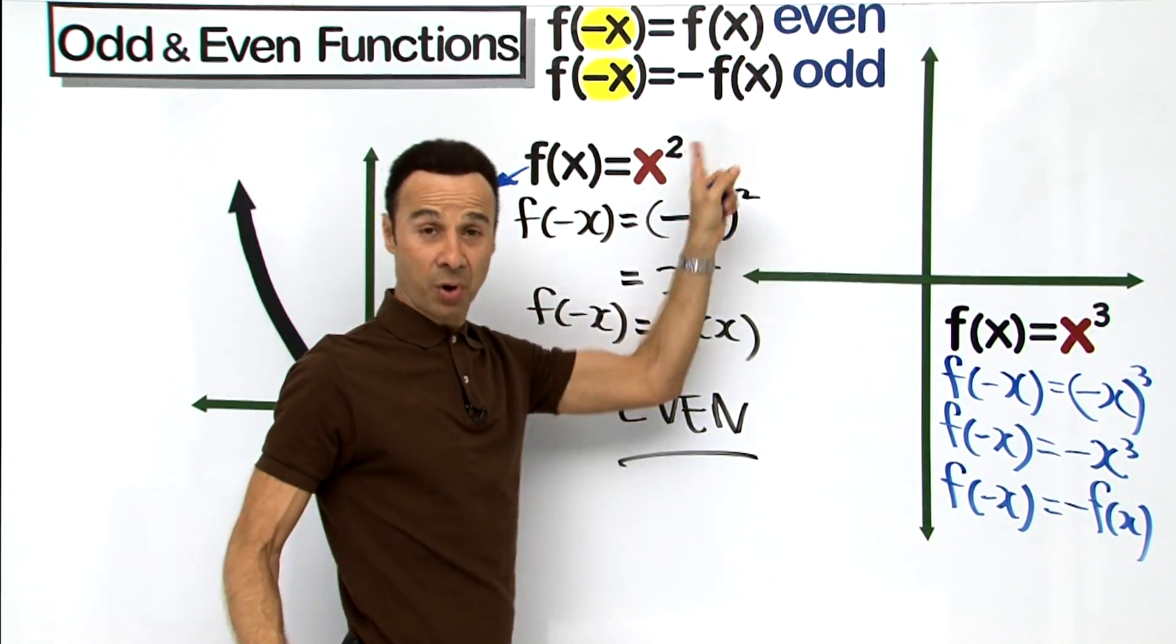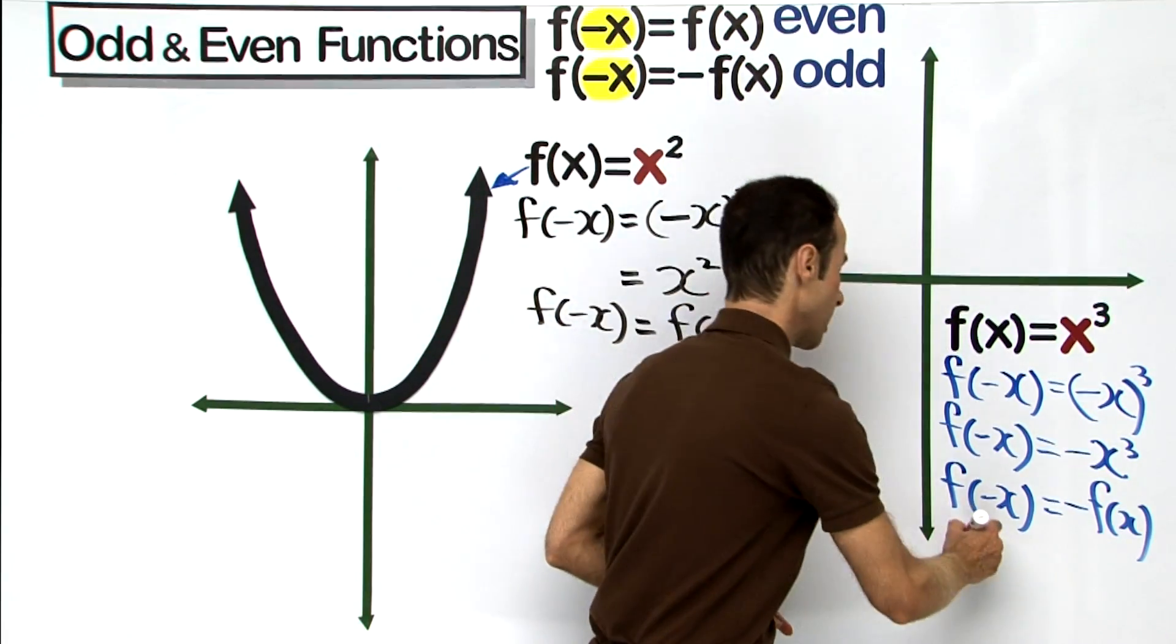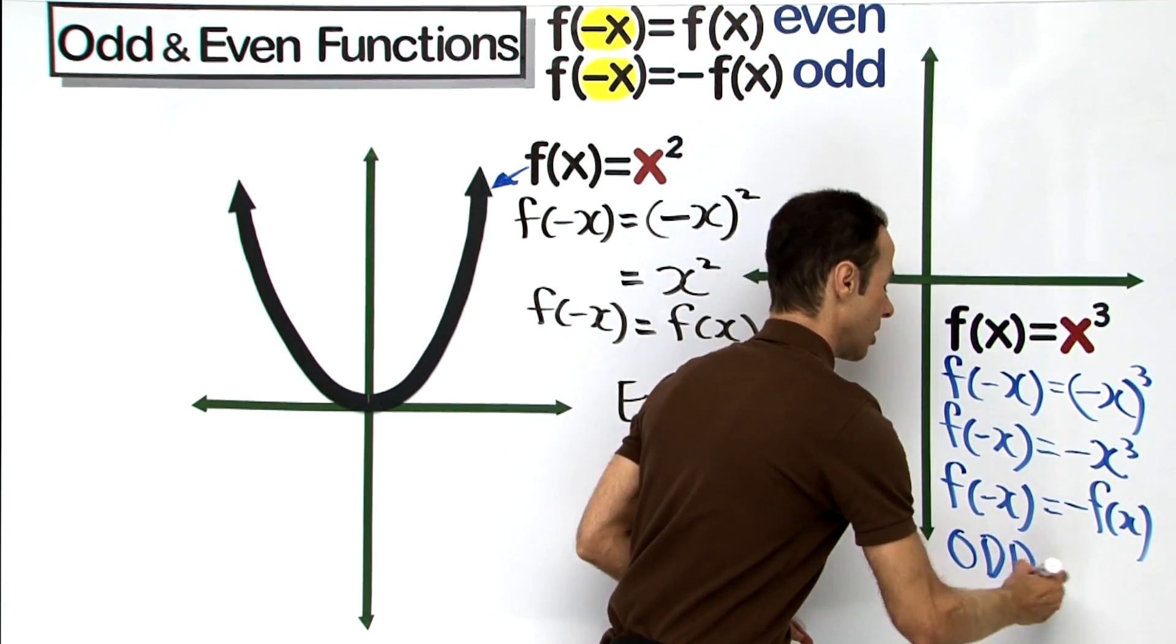So therefore it is equal to negative f(x), isn't it? So it looks like it is going to be the bottom one, which means it is an odd function.